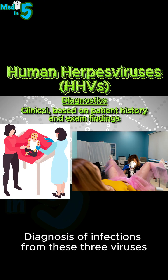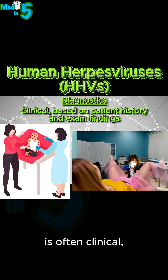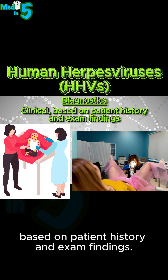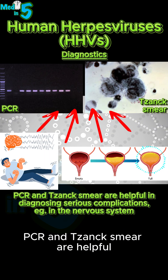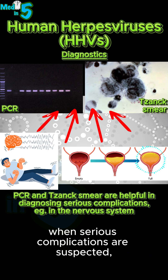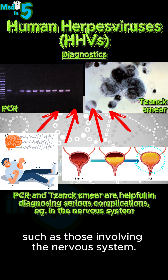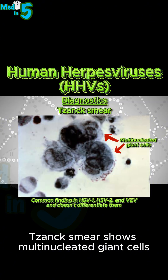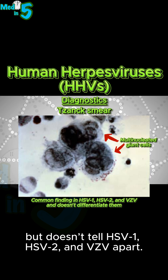Diagnosis of infections from these three viruses is often clinical, based on patient history and exam findings. PCR and Tzanck smear are helpful when serious complications are suspected, such as those involving the nervous system. Tzanck smear shows multi-nucleated giant cells, but doesn't differentiate HSV-1, HSV-2, and VZV.